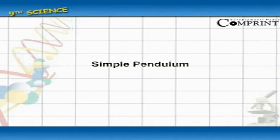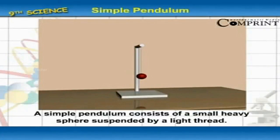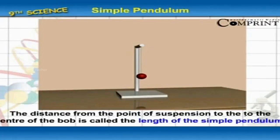A simple pendulum consists of a small heavy sphere suspended by a light thread. The distance from the point of suspension to the center of the bob is called the length of the simple pendulum.